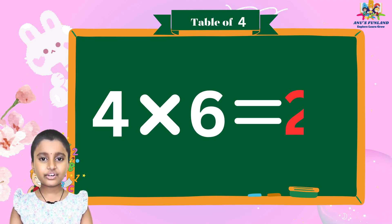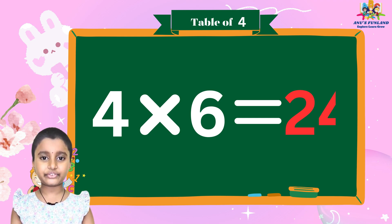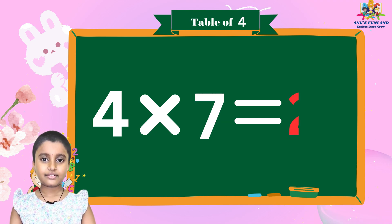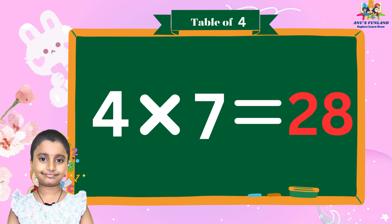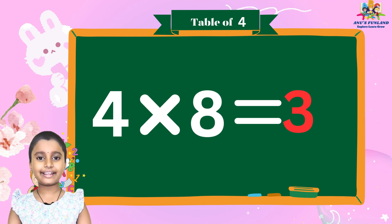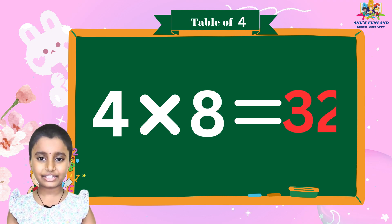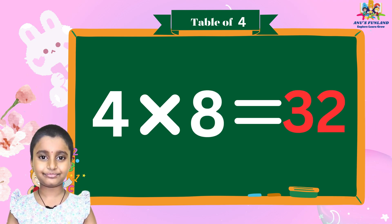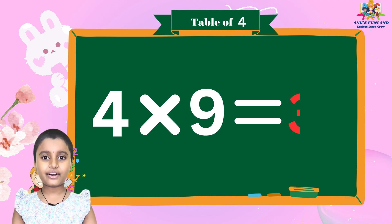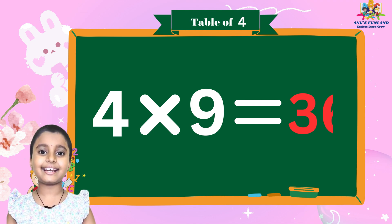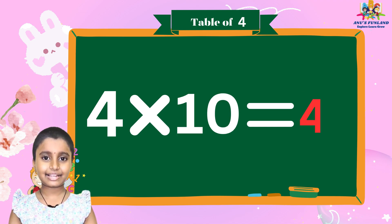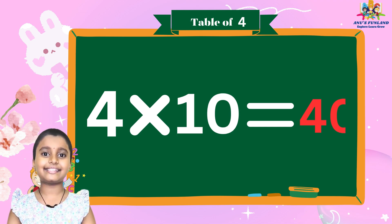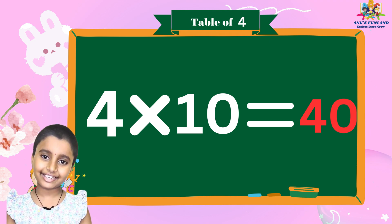Four sixes are twenty-four, four sevens are twenty-eight, four eights are thirty-two, four nines are thirty-six, four tens are forty.